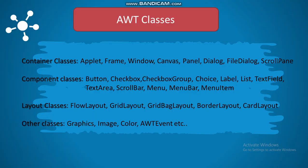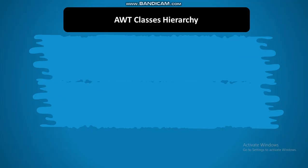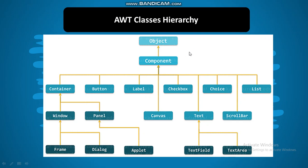The next point is the hierarchy of these classes — the window fundamentals. There is a class hierarchy here. At the very first level there is the object class, and the component class is a subclass of object. At the top of the AWT hierarchy there is the component class, which is an abstract class that encapsulates all of the attributes of the visual component.